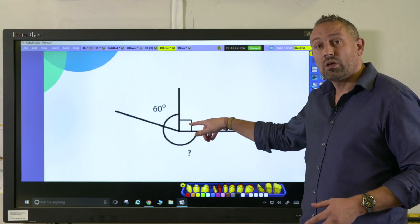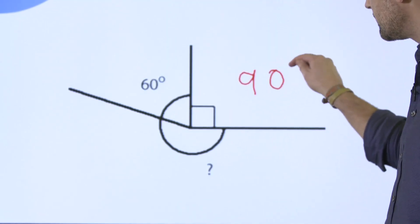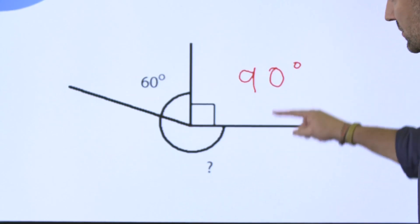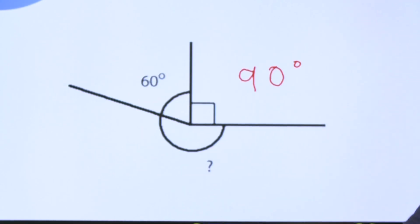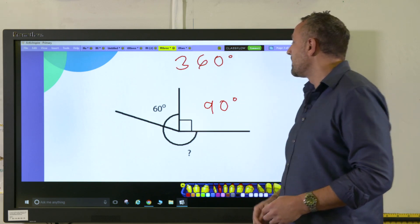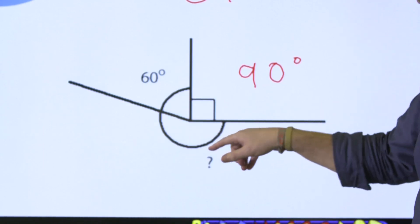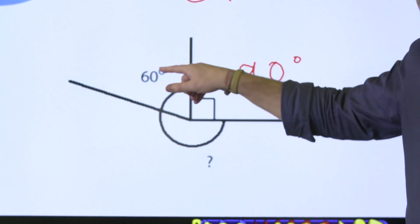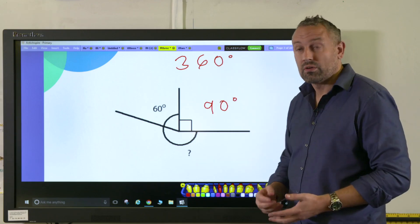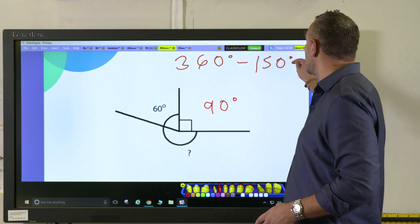First of all, they have to realize that this symbol here denotes a right angle which is 90 degrees, and they have to realize that they're dealing with a whole turn here which is 360 degrees. In order for them to calculate what this missing angle here is, they'll have to do 90 plus 60, which equals 150, and then subtract that from the full turn. So 360 minus 150 degrees.